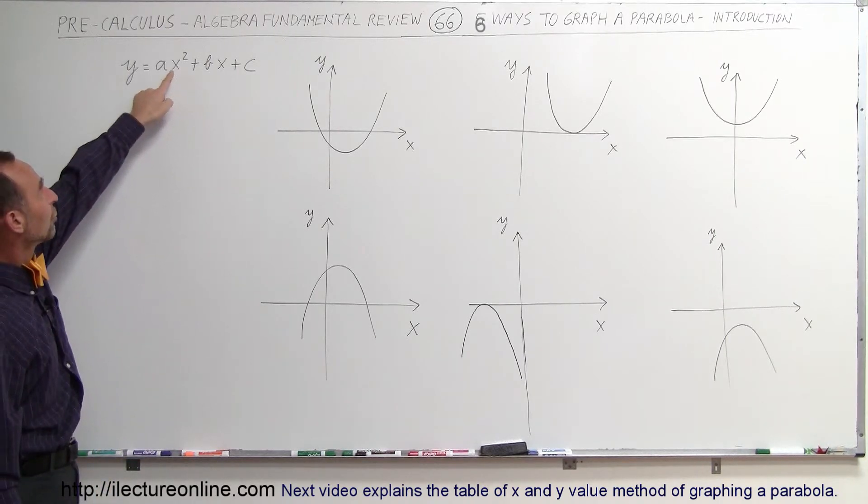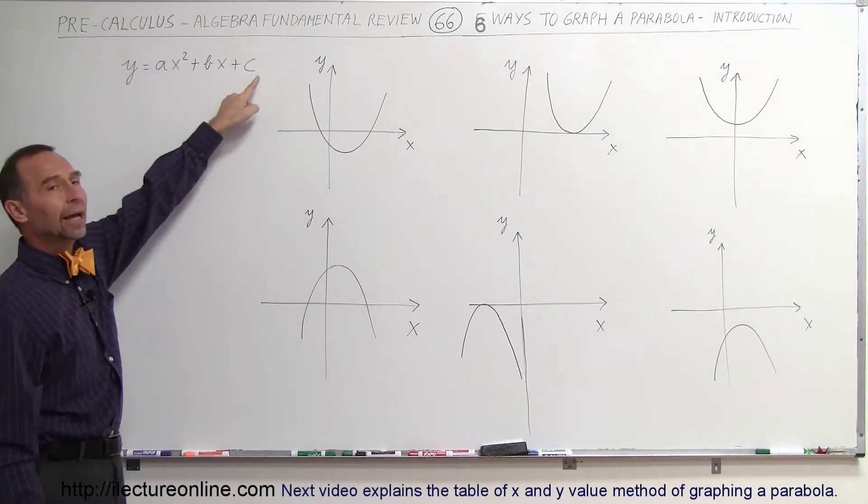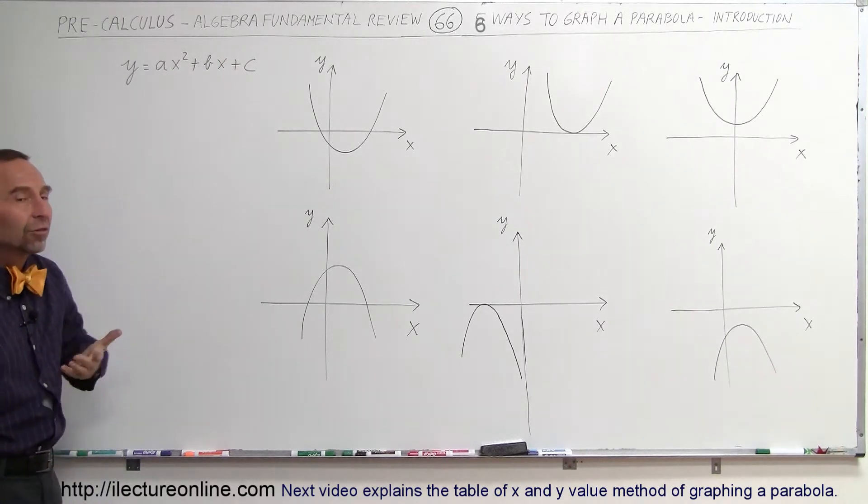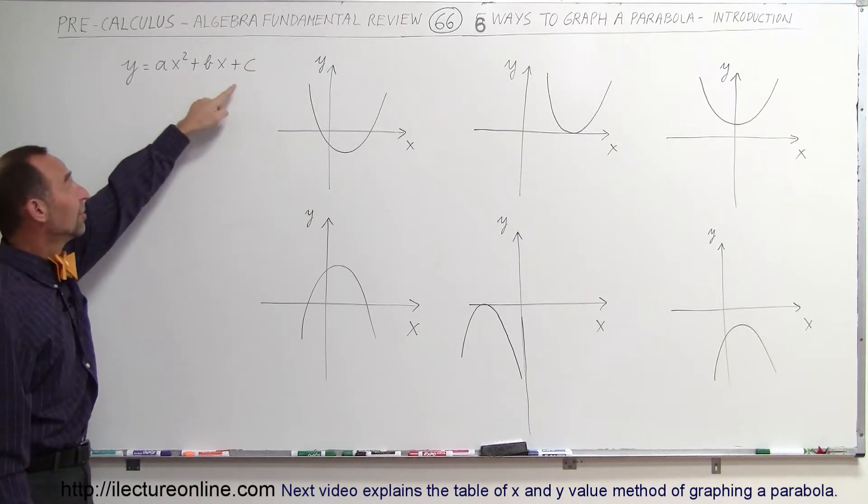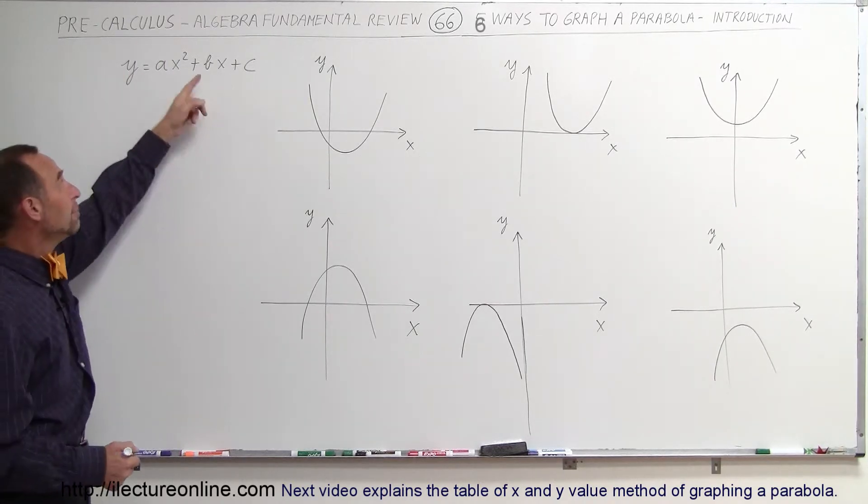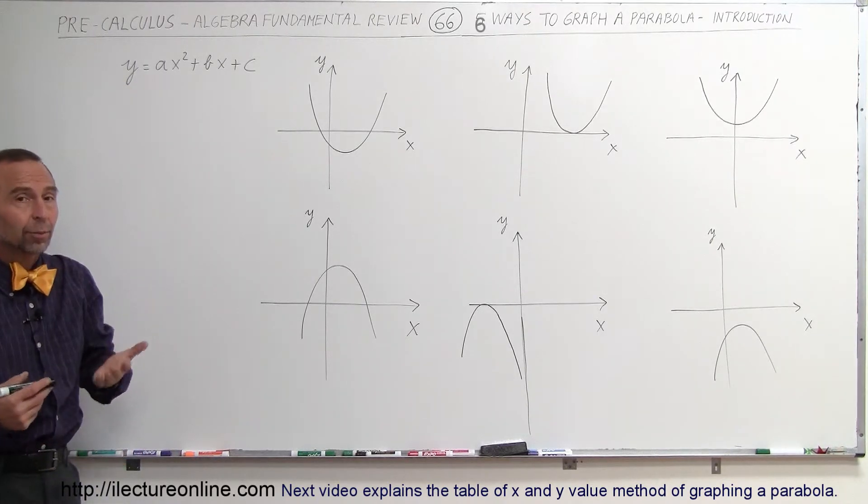It's a second order equation where the first term has an x squared, the second term has an x to the first power, and the third term is simply a constant. Now, this b, those are coefficients a, b, and c are coefficients. They're just numbers. And b and c could be zero. We simply could have y equals x squared. It's still a parabola.